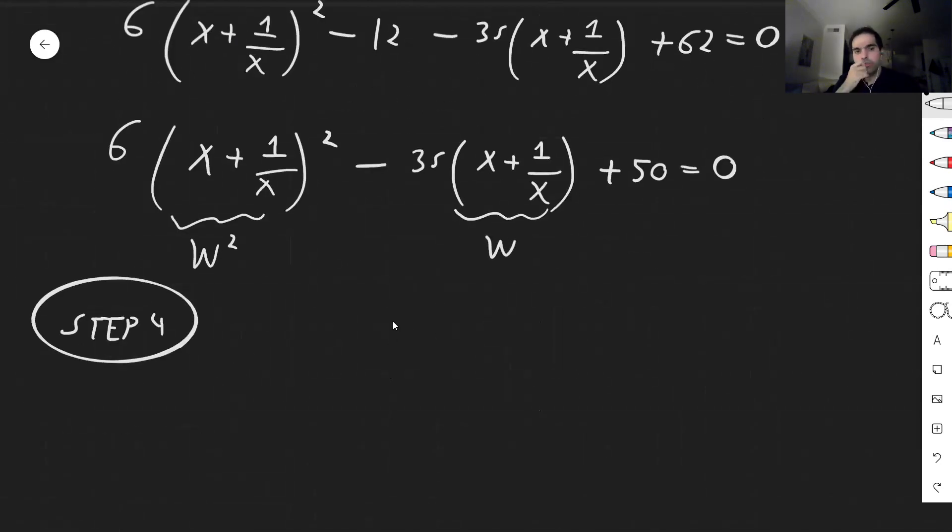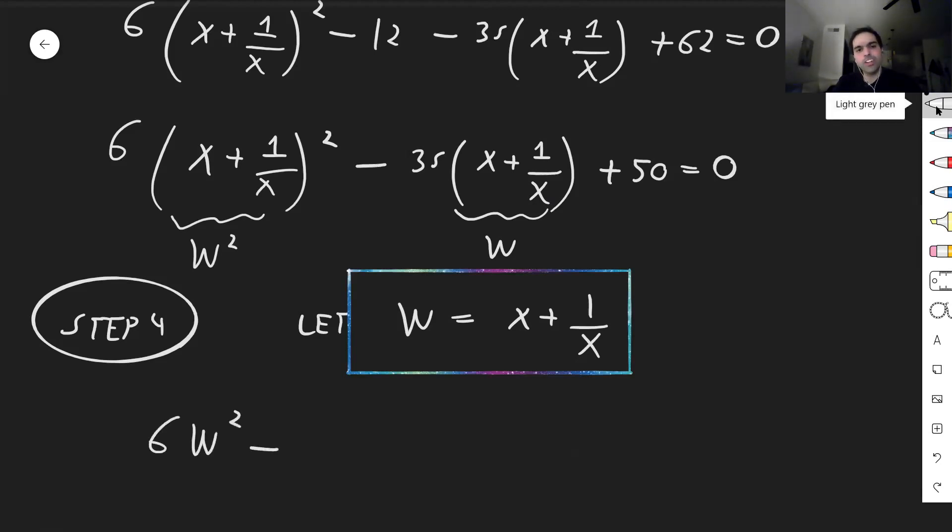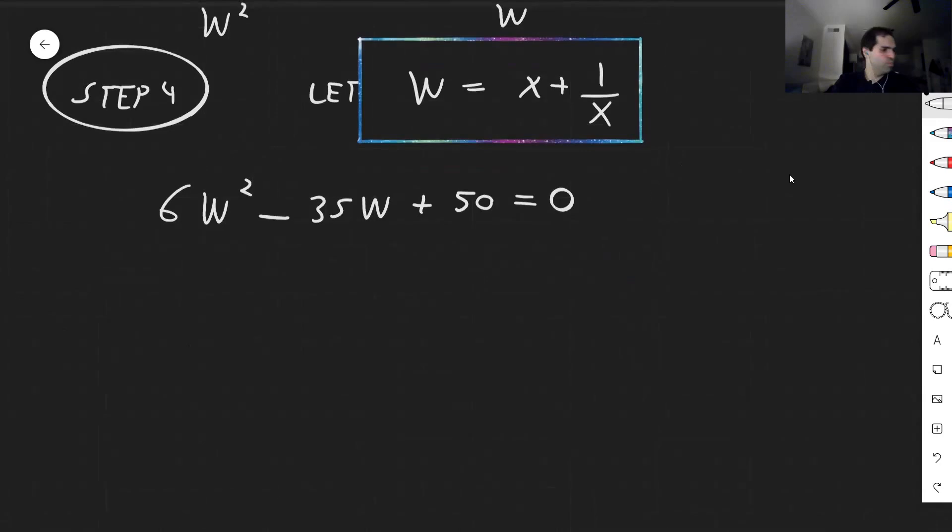So step four. So let w be x plus 1 over x. So let me border that. Then this becomes 6w squared. Box it. That's what I want. So let's box this. Then this becomes 6w squared minus 35w plus 50 equals 0. But this you can use a quadratic formula, for instance. But let's just divide it by 6.